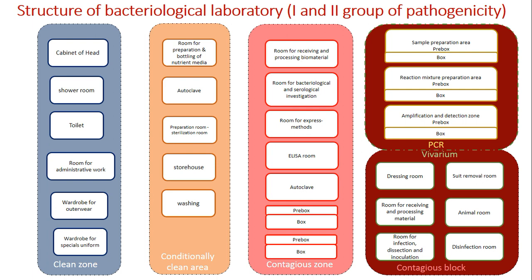In the contagious zone we also find a contagious block for PCR with three boxes and pre-box, sample preparation area, reaction mixture preparation, and amplification and detection zone. The vivarium consists of a dressing room, suit removal room, room for receiving and processing material, room for animals, room for infection and dissection, and inoculation and disinfection room.